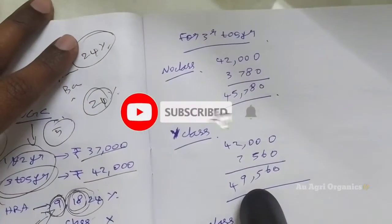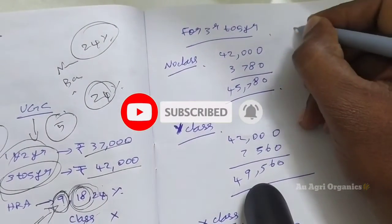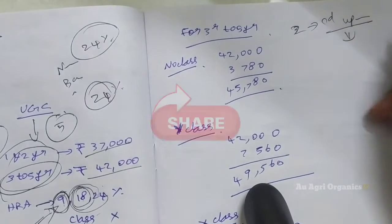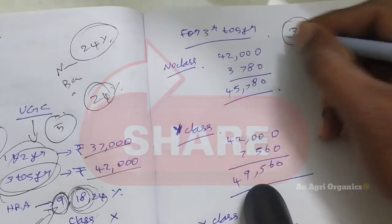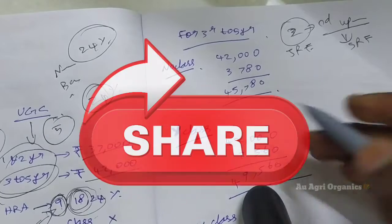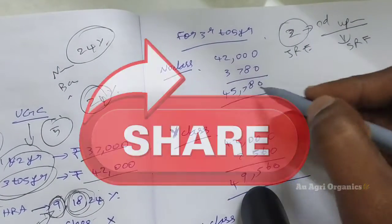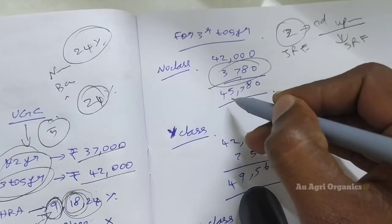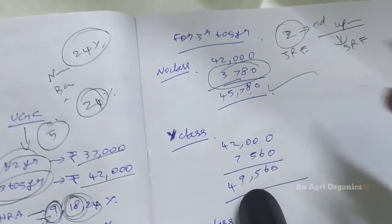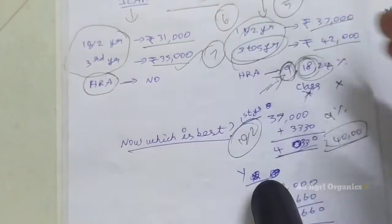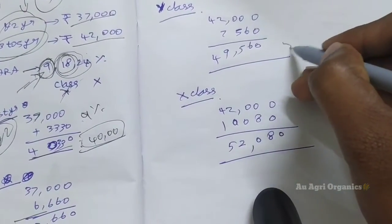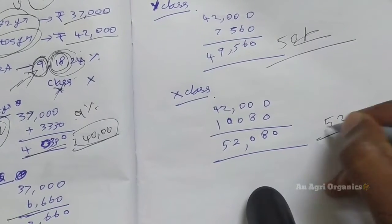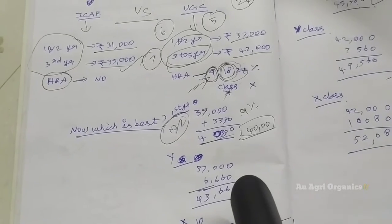Next is from the third year to fifth year. So during this second year, after completion of the second year, you have to upgrade to SRF. For the first two years, you will get JRF. Next, from the third year, if you are not belonging to any of those X and Y class city, you will get 3,780 Rupees HRA. Totally you will get 45,780 Rupees. Here you can see, only you can get 35,000. Next is Y class city, you can get nearly 50,000, 50K. Next is for this X class city, you will get 52,000. So this is the difference between this ICAR and UGC fellowship.